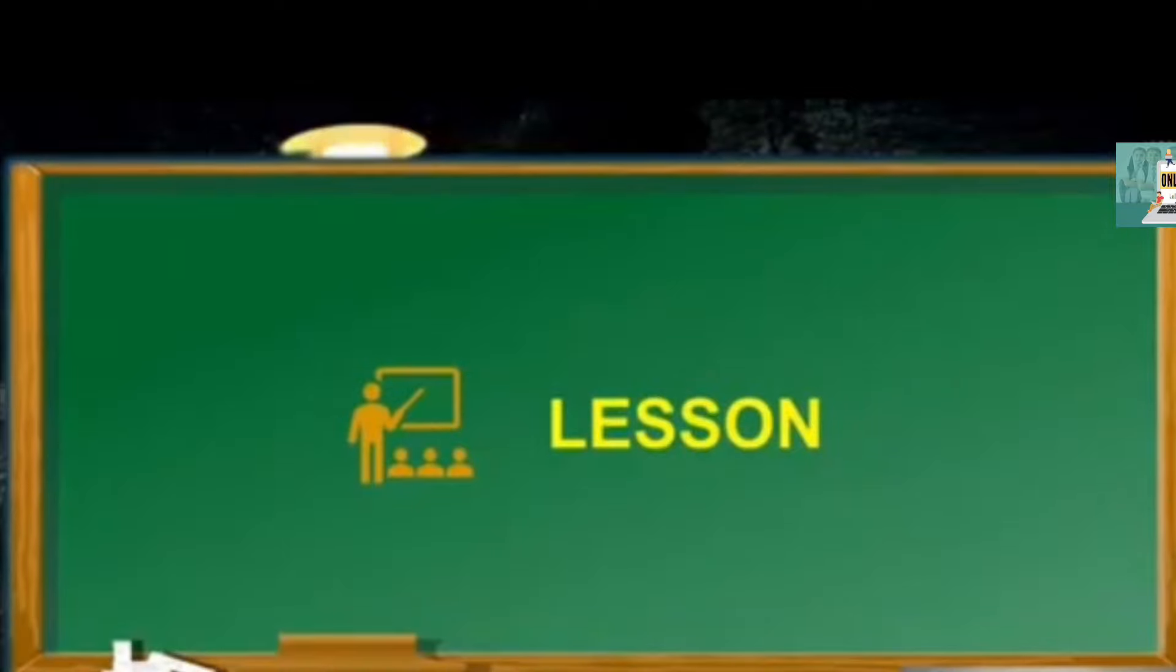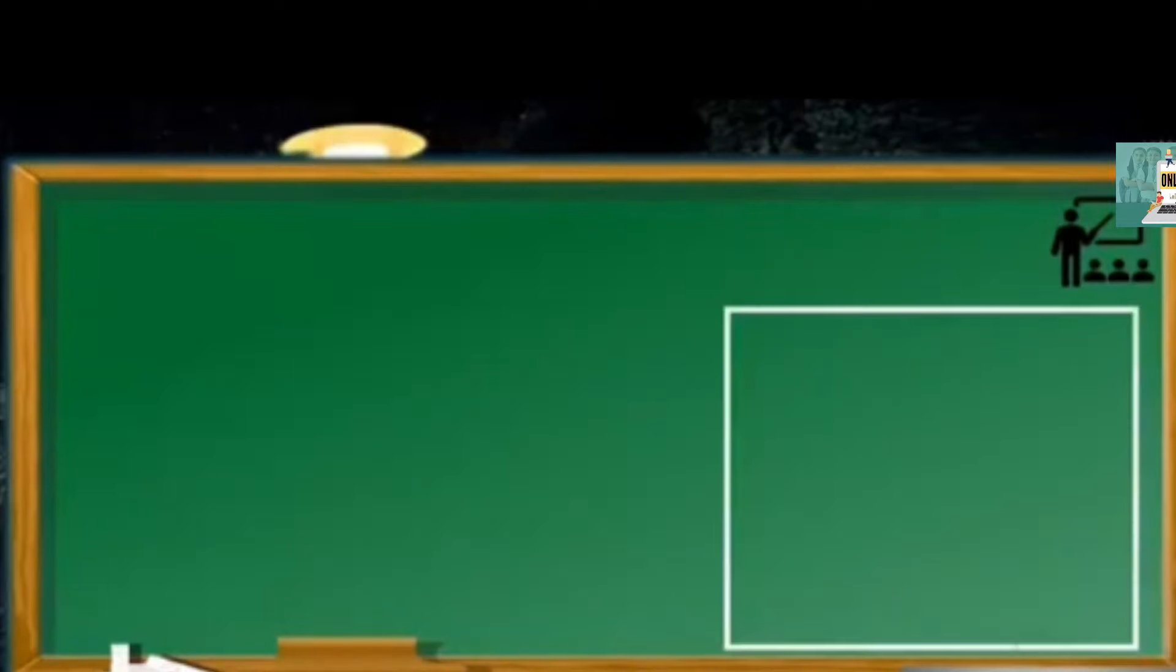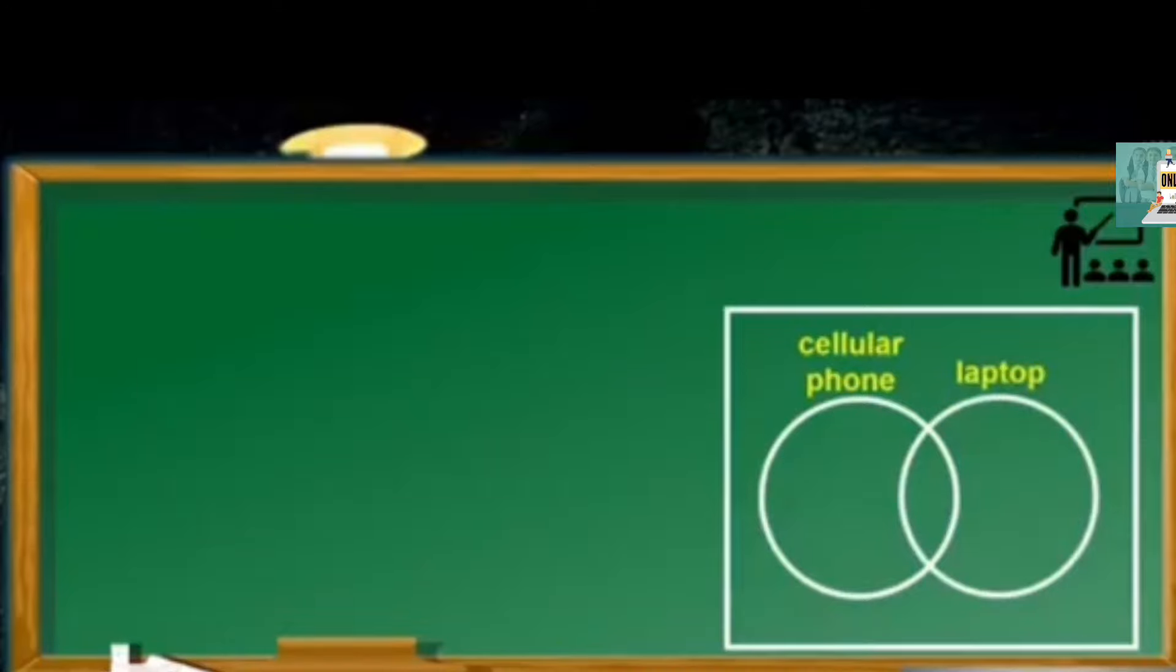Let's have our lesson for today. 58 students in a class were asked about the kind of learning tools available in their homes for the new normal in education. The results were as follows: 49 students have cellular phones, 10 students have laptops, and 7 students have both cellular phones and laptops. So we represent them using a Venn diagram. We will draw a rectangle, one circle for the set of cellular phones, and one circle to represent the laptop users.